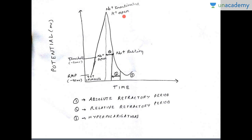Once sodium is inactivated and no longer moving in, the potassium channels open and potassium starts moving out from inside to outside along its concentration gradient, as its permeability has suddenly increased. The membrane potential then starts to become negative again because positive ions are moving out of the cell.